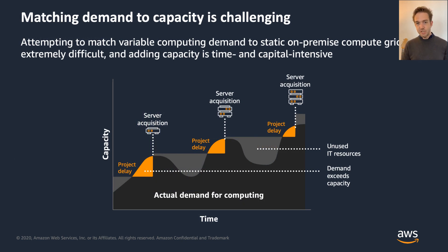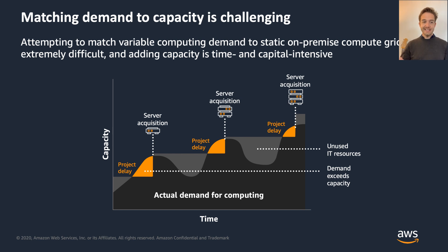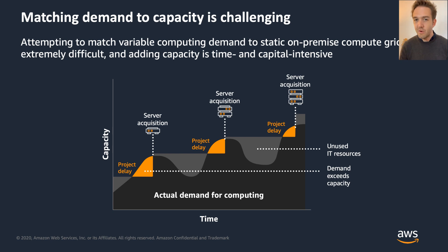Consider the scenario where your current 1,000-core cluster is working fine and then a customer wants high-fidelity simulations. You go to your business leader asking to buy a bigger cluster — that takes weeks or months, and they might ask whether it's really just one customer. You might have to turn work away. On AWS, it doesn't matter if it's just one customer running one job for one hour — you can do it because you only pay as you use it. That's a significant shift in how you operate.